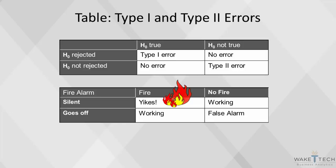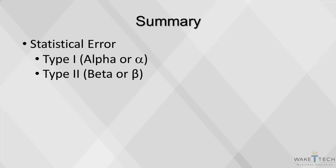The opposite case may also happen. If the alarm goes off and there's actually a fire, there's no error. But if there's no fire and the alarm goes off, it's a false alarm — that's the type 2 error. Here it is a less serious problem. This concludes our video on statistical error. Today we discussed type 1 or alpha error and type 2 or beta error.